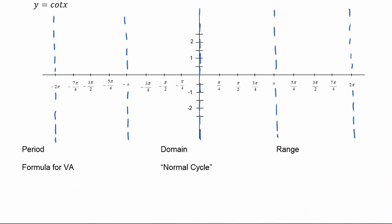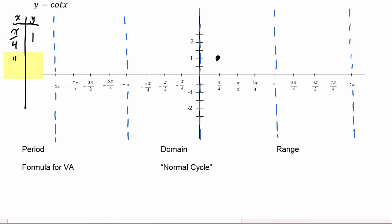We're ready now to build up our graph of cotangent, so let's pick a few x values and plot some points. If we pick x is pi over four, we know that cotangent of pi over four is equal to one. If x is pi over two, cotangent of pi over two is zero. And cotangent of three pi over four is equal to negative one.